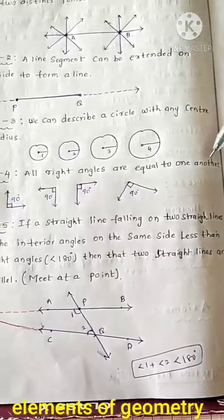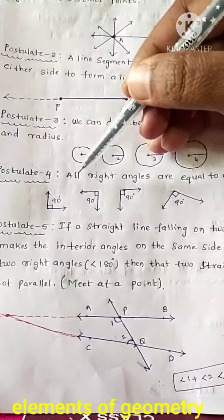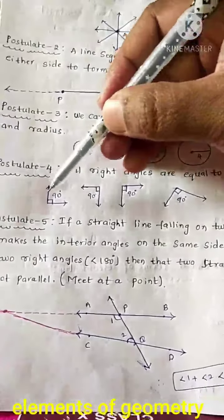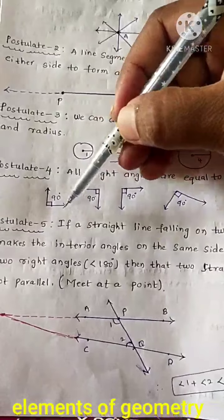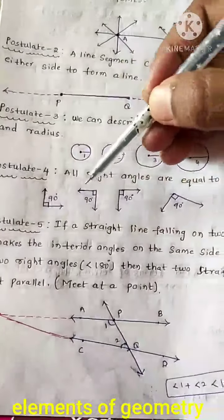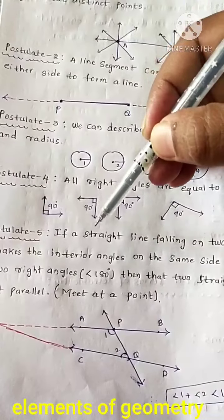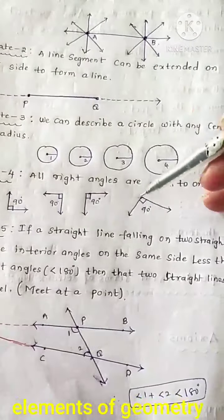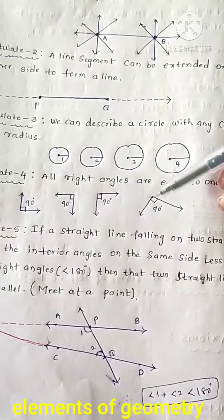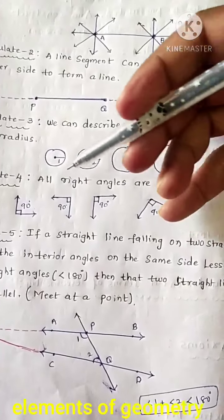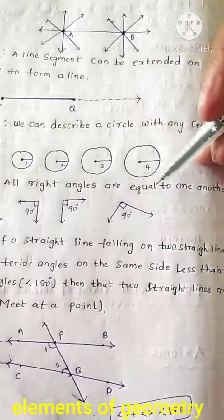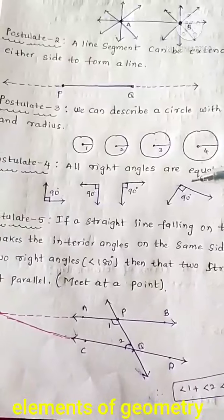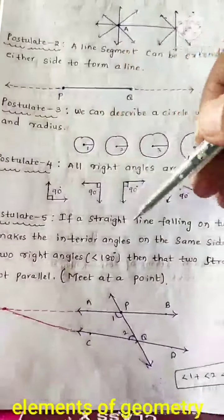Postulate 4: all right angles are equal to one another. The first right angle is 90 degrees, changing direction it is still 90 degrees, another direction still 90 degrees — you can take any right angle and all right angles are always equal to one another.